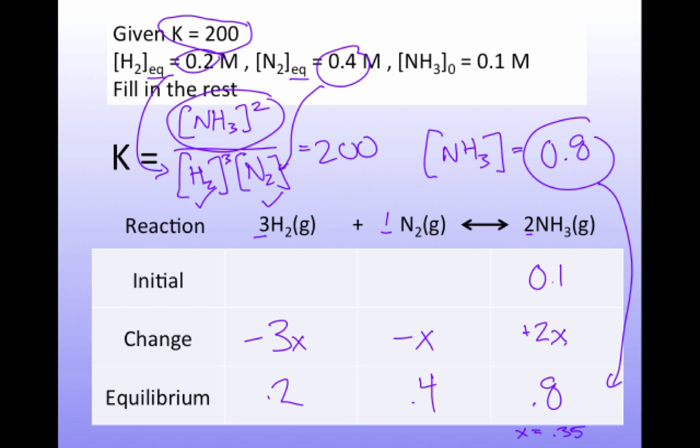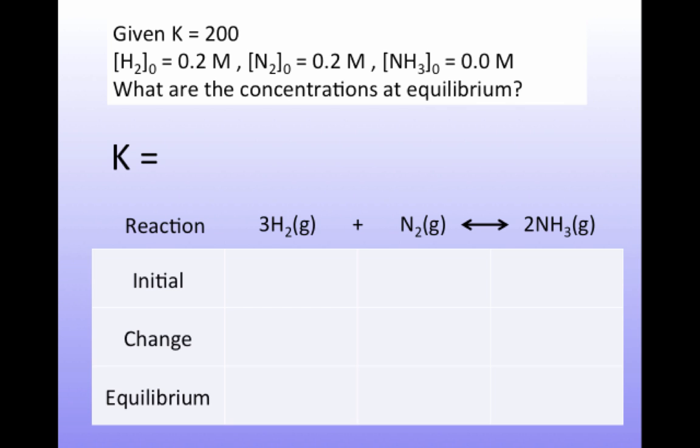Let's look at a slightly more difficult problem. And this is a typical sort of equilibrium problem. And a typical sort of equilibrium problem is the following. I know the equilibrium constant, and I know what I start with. These zeros here are telling me my initial concentrations. And so I have 0.2 molar hydrogen, 0.2 molar nitrogen, and no ammonia to begin with. What are the concentrations at equilibrium?